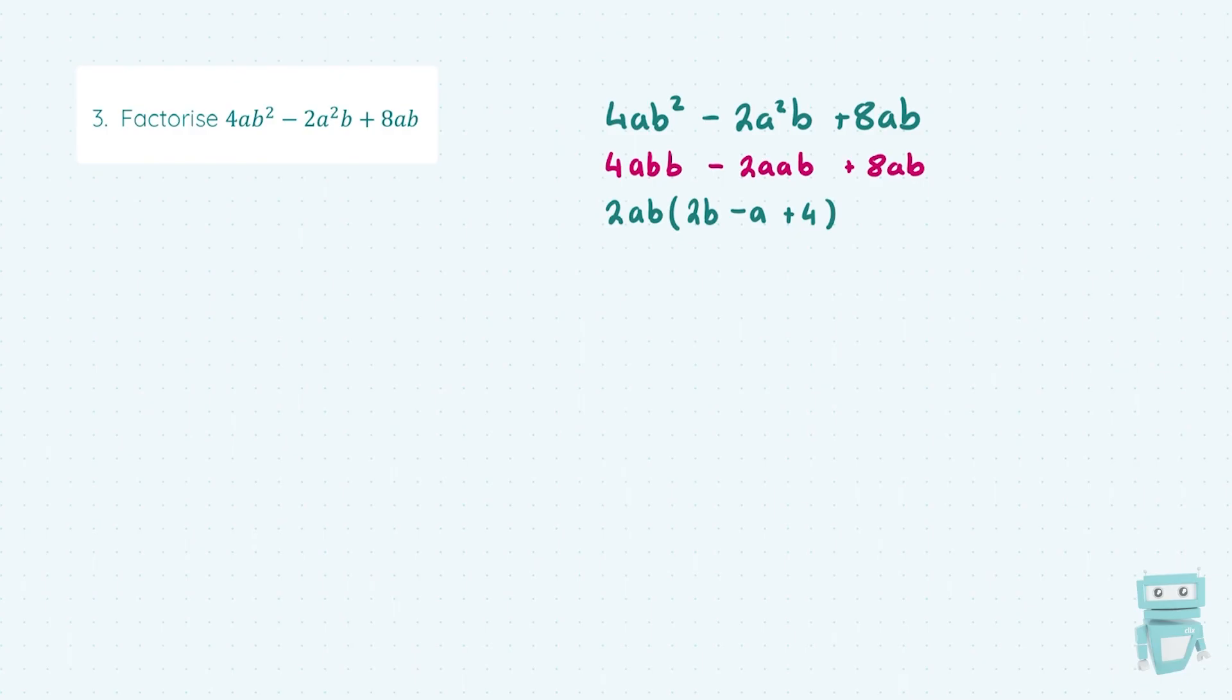In question 3 as an extra step, I've split up the 4ab squared into 4abb, and similarly with the 2a squared b, I split it up into 2aab so I could visualize how many of each variable they had, just to help us figure out what is the highest common factor involved here. You know, if you're a little unsure, it absolutely helps.